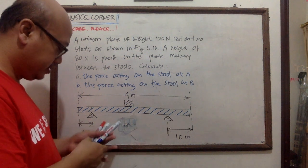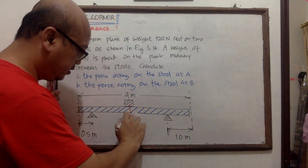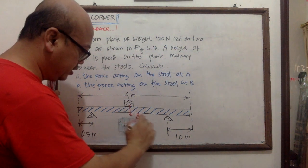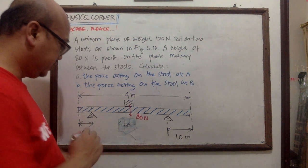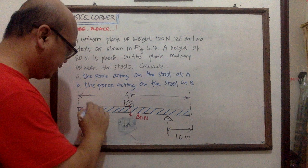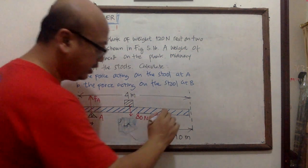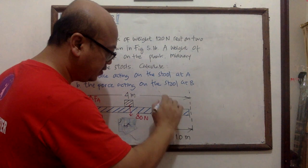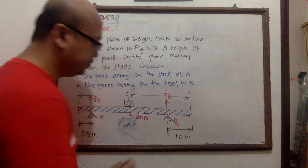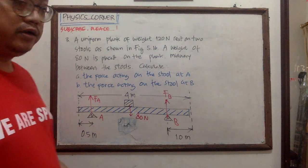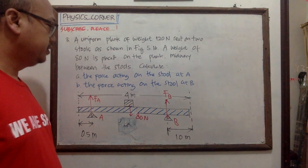The length of the plank is four meters, and the block is 80 newtons. This is point A, so we have force A here, and this is point B, so we have force B here. We need to find FA and FB.